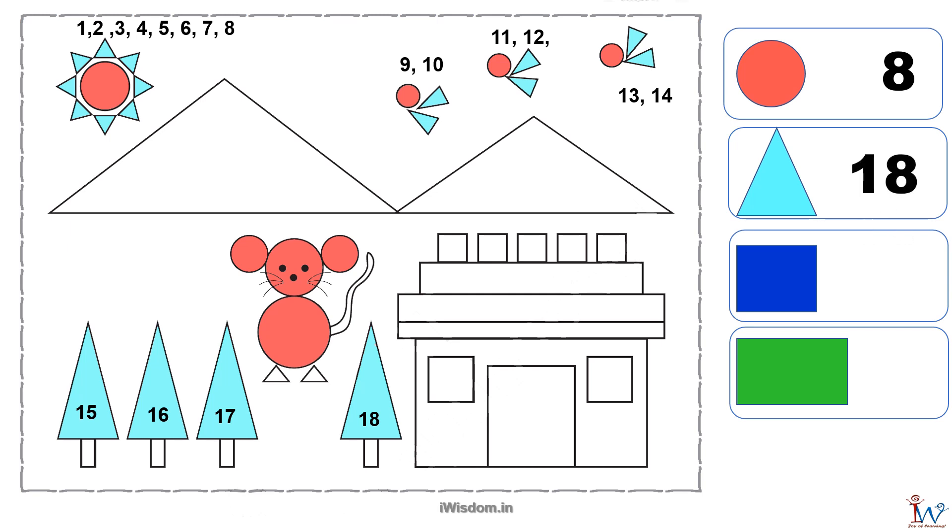Hey curious, you missed hills and feet of the cat. They are also triangles. Oh yes, that is four more. So we have nineteen, twenty, twenty-one and twenty-two. A total of twenty-two triangles.